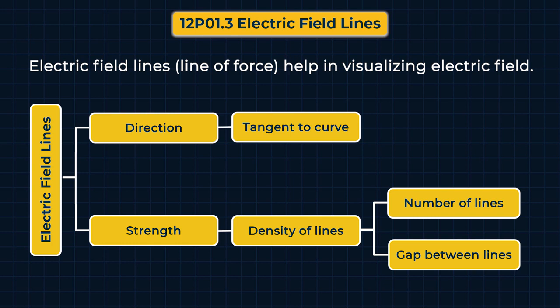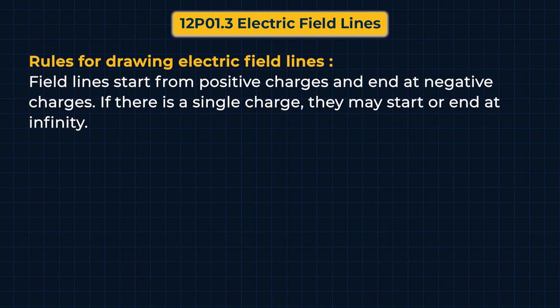Now we have some rules to draw electric field lines. The first rule is that field lines start from positive charges and end at negative charges. If there is a single charge, then electric field lines may start or end at infinity.